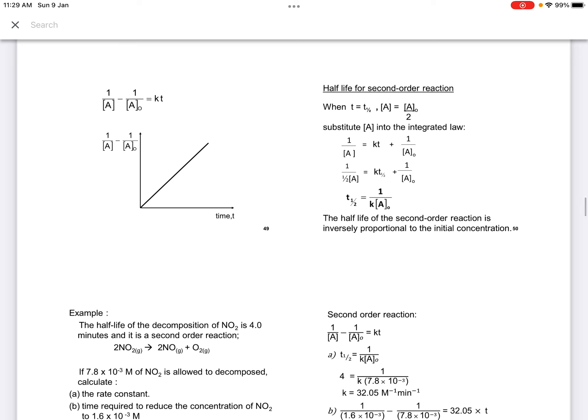Half-life for the second-order is T-half equals to 1 over K A0. The half-life of second-order reaction is inversely proportional to the initial concentration.